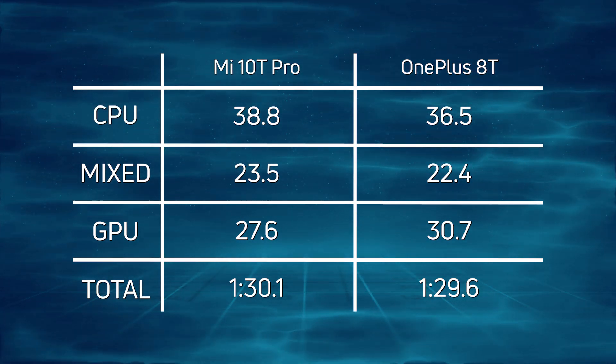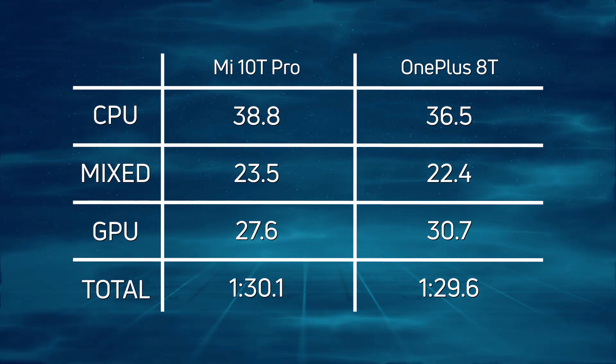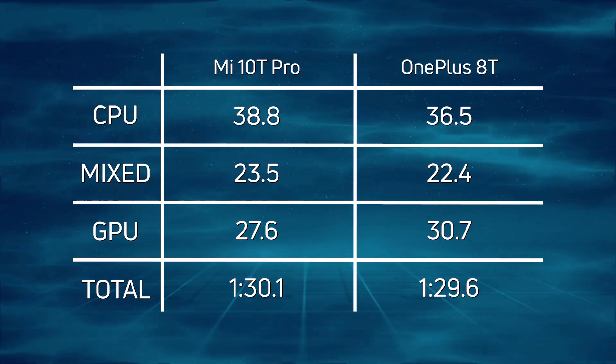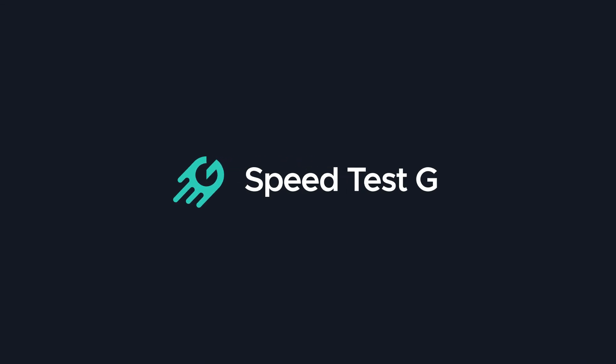So overall, the OnePlus 8T did win at 1 minute 29.6. My name is Gary Sims, this is SpeedtestG. I really hope you enjoyed this video — if you did, please give it a thumbs up. If you have any questions about the test, please check out the FAQ; the link is in the description.